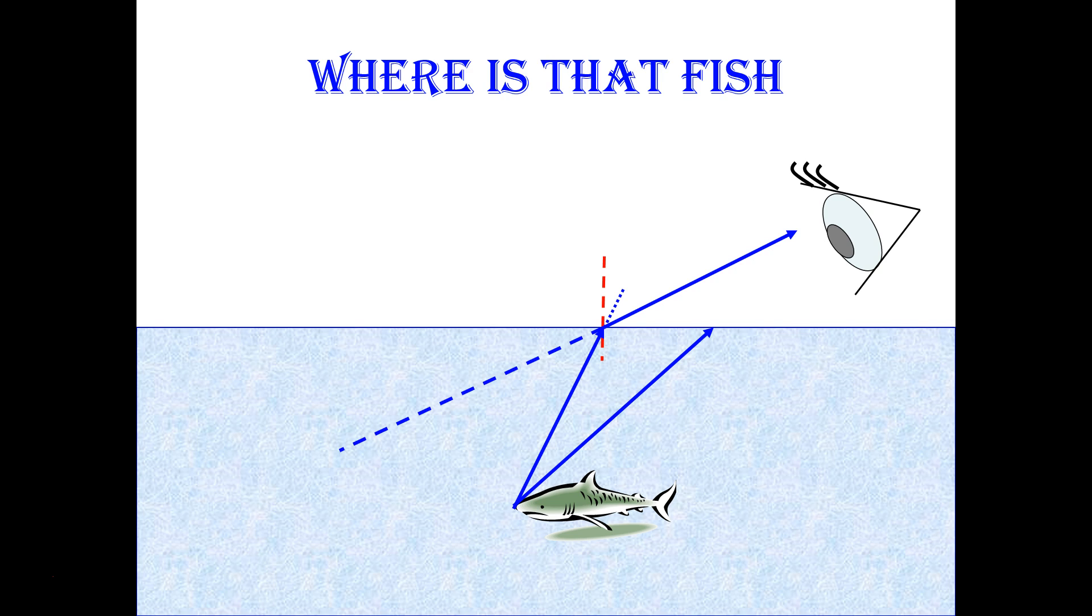And of course, as we've discussed already in class, your brain thinks that light cannot refract. It thinks it had to have come in a straight line.